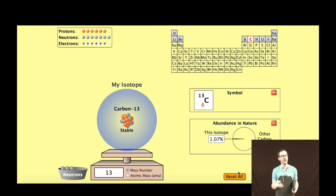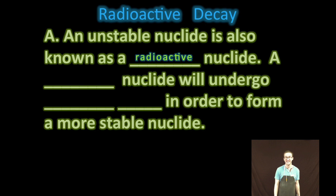And so the neutrons play an important role in helping to hold the nucleus together. For elements with atomic number less than 20, generally a one-to-one ratio of neutrons to protons is fairly stable. As you get more and more protons, however, you need a greater ratio of neutrons to protons to help hold that nucleus together.